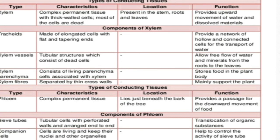There are three dead components and only one living cell in xylem. Xylem parenchyma is the only living component; the rest — tracheids, xylem vessels, and xylem fibers — are dead. Tracheids provide a hollow tubular network; vessels allow free flow of water; xylem parenchyma stores food; and xylem fibers are sclerenchymatous tissue which provide mechanical strength and support to the xylem vessel.